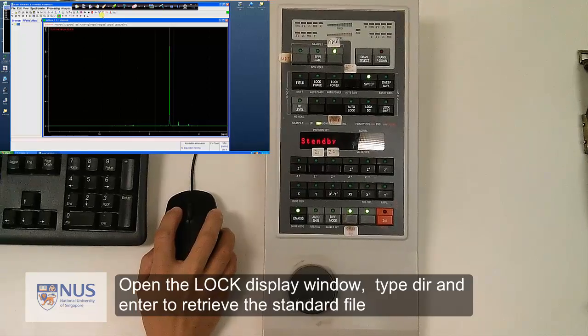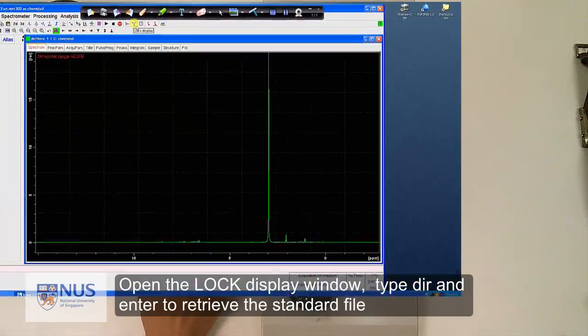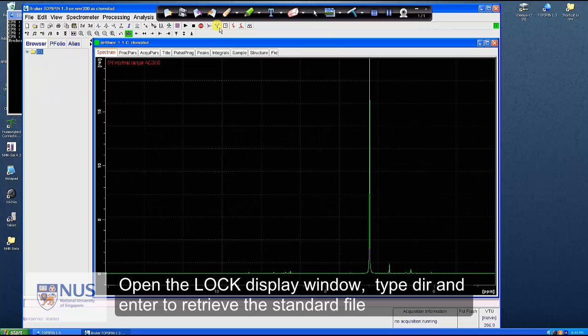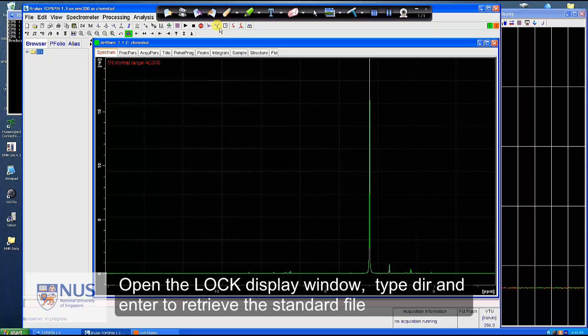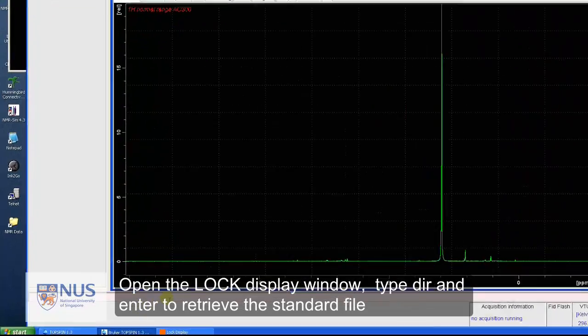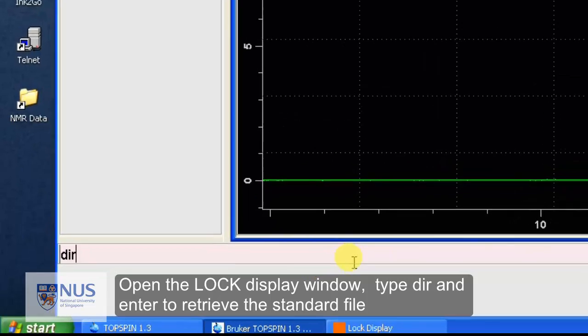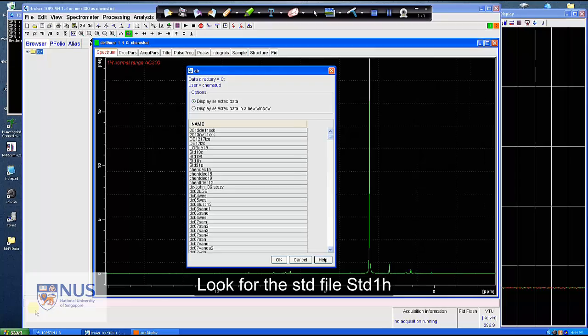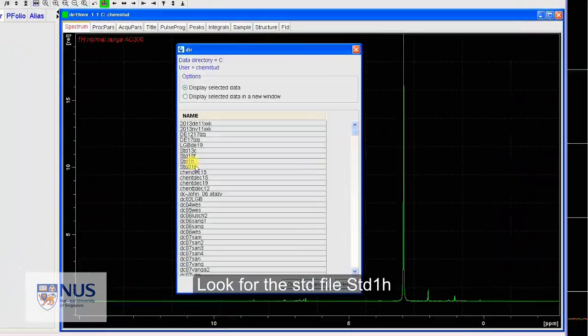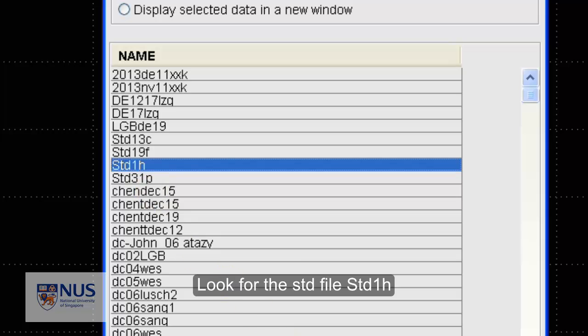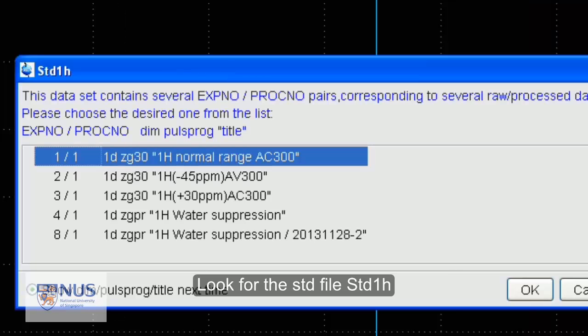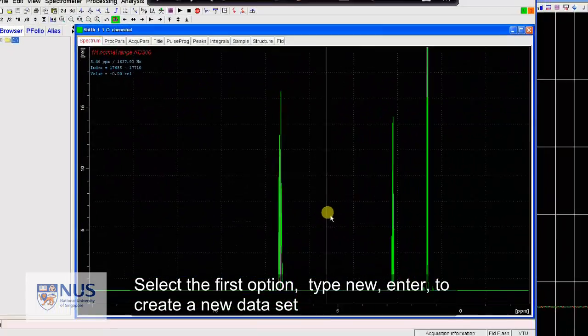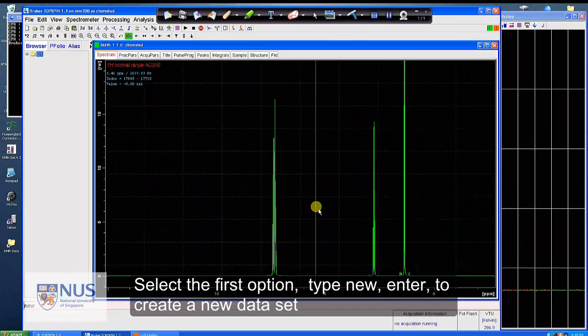Open the lock display window. Type dir and enter to retrieve the standard file. Look for the center file, std1h. Select the first option. Type new, n-e-w, enter to create a new data set.